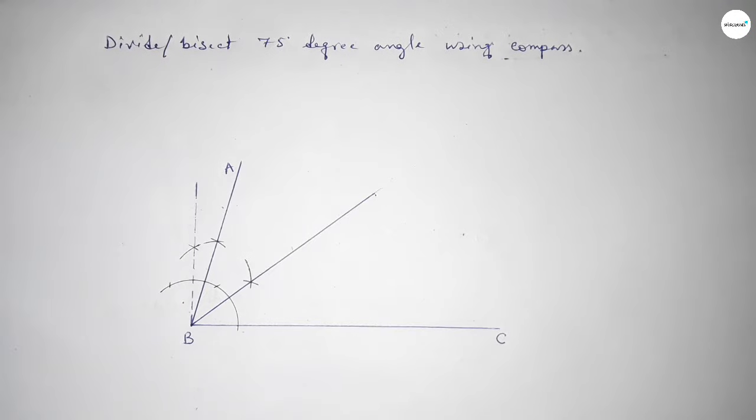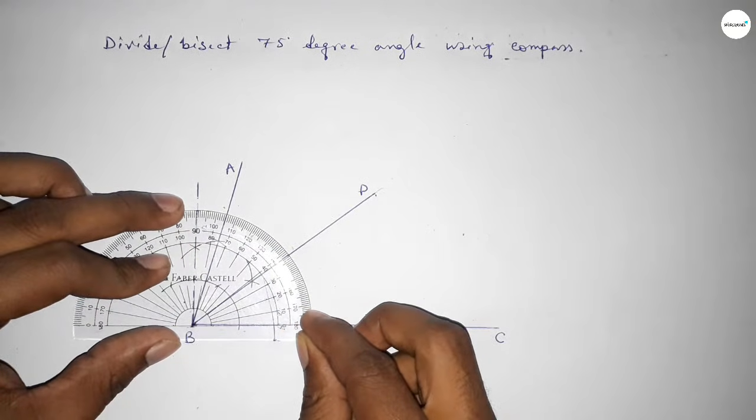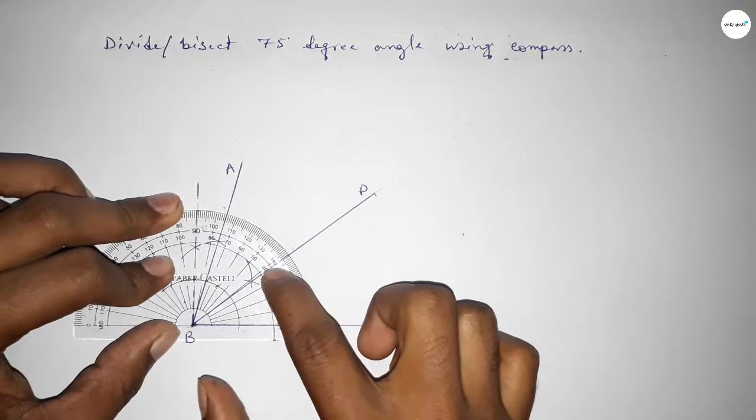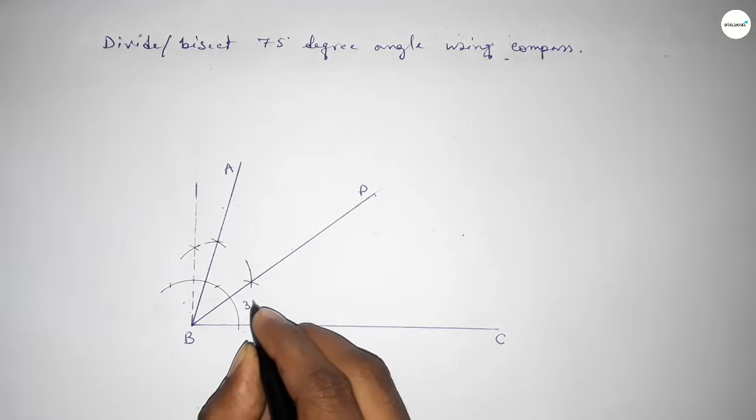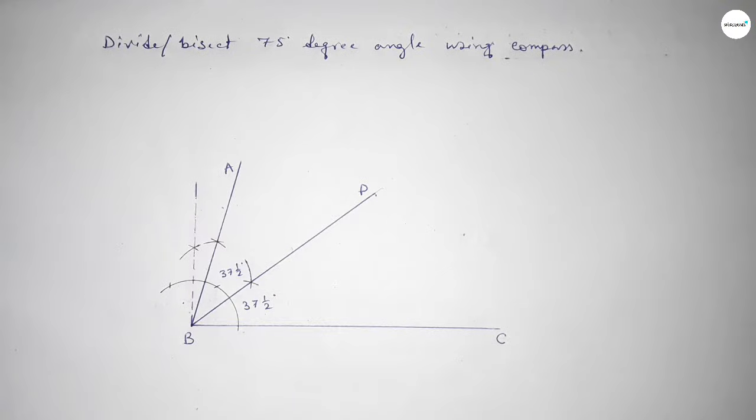So taking here point P. Now checking whether it is correct or not. So this is 37 and 1 by 2. So this is 37 and 1 over 2 degree, this is also 37 and 1 over 2 degree.